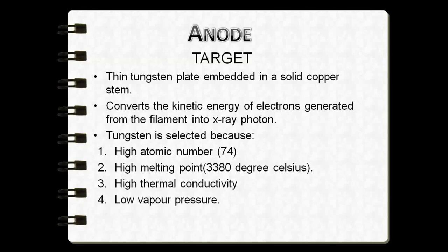Another property of tungsten is its higher melting point of around 3380 degrees Celsius, meaning the target will not melt if the temperature rises. It also has low vapor pressure, so the target does not get vaporized at high temperatures. Tungsten is actually a poor conductor of heat compared to copper, which is why the tungsten target is embedded within the copper stem — copper's higher thermal conductivity dissipates heat effectively.